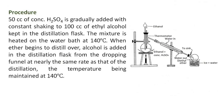Procedure: 50 cubic centimeters of concentrated sulfuric acid is gradually added with constant shaking to 100 cubic centimeters of ethyl alcohol kept in the distillation flask. The mixture is heated on the water bath at 140 degrees Celsius.